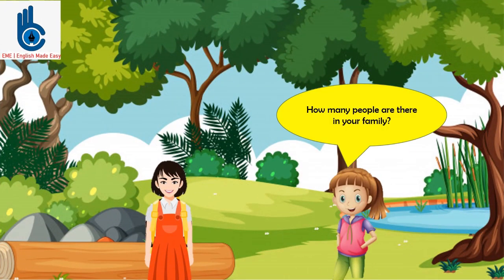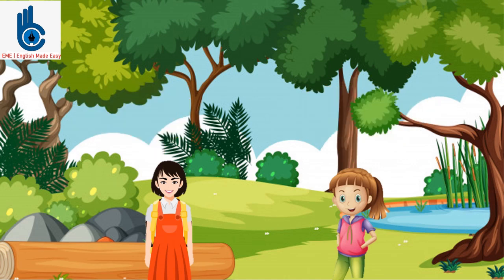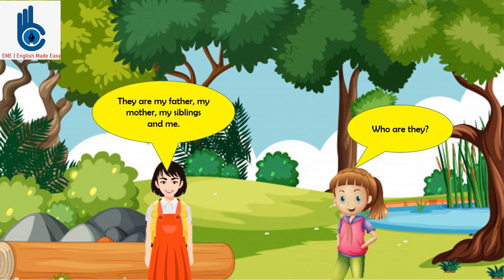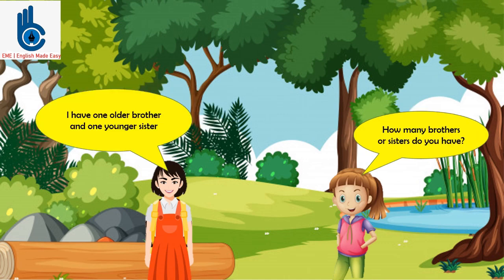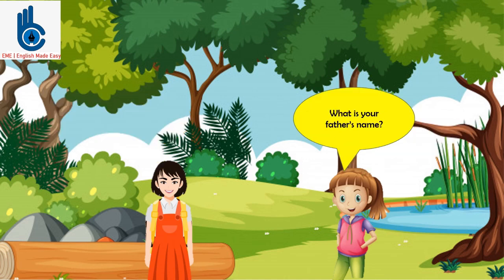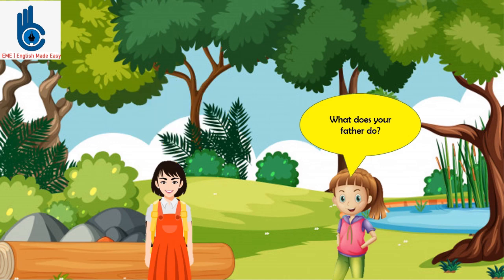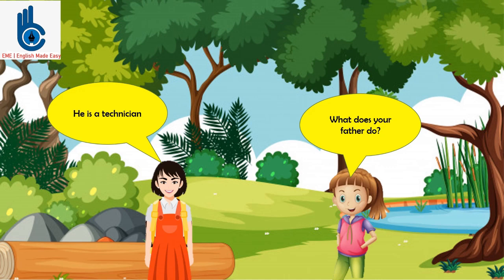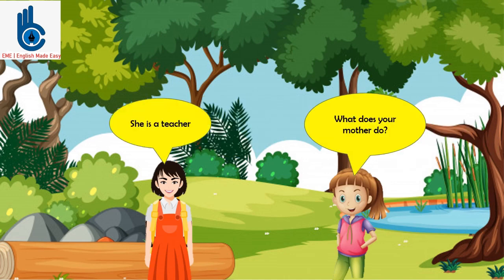How many people are there in your family? There are five people in my family. Who are they? They are my father, my mother, my siblings, and me. How many brothers or sisters do you have? I have one older brother and one younger sister. What is your father's name? My father's name is Mr. Jack. What does your father do? He is a technician. What is your mother's name? She is Mrs. Lucy. What does your mother do? She is a teacher.